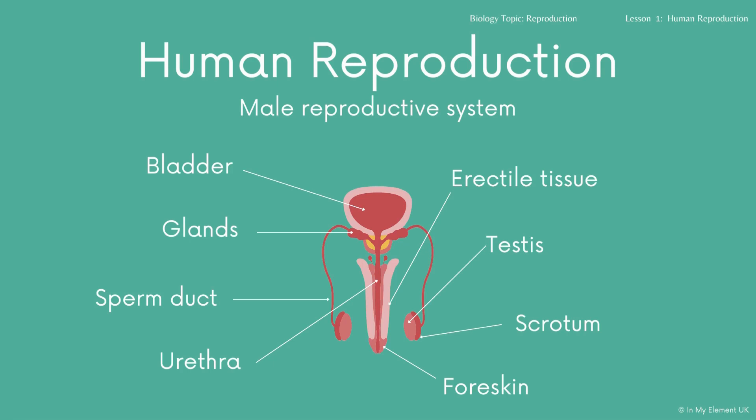For example, the testes are where the sperm is stored, the scrotum is the bit that surrounds the testes, and you need to know the role of the penis, the role of the sperm duct, and the fact that the urethra is also used in transporting urine out of the body as well as semen. You need to be able to do the same for both male and female, explaining all the different parts and the roles that they have.